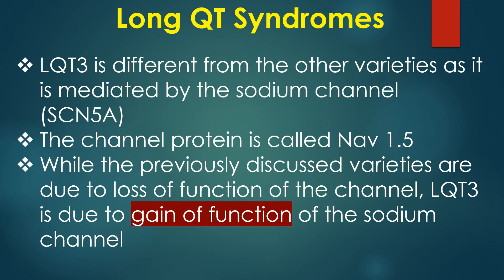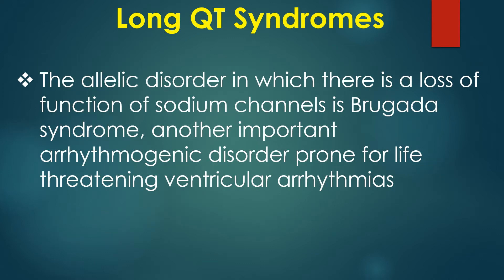LQT3 is different from the other varieties as it is mediated by the sodium channel. The channel protein is called Nav1.5. While the previously discussed varieties are due to loss of function of the channel, LQT3 is due to gain of function of the sodium channel. The allelic disorder involving loss of function of sodium channels is Brugada syndrome, another important arrhythmogenic disorder prone to life-threatening ventricular arrhythmias.